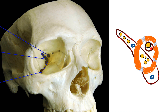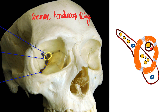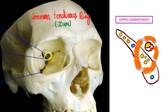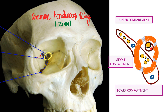There are four important recti muscles in the eye: the superior rectus, inferior rectus, medial rectus, and lateral rectus. These four recti take origin from a ring attached onto the superior orbital fissure called the common tendinous ring — also called the annulus of zinn — because it serves as a common tendinous origin. This ring divides the superior orbital fissure into a superior compartment (above the ring), a middle compartment (within the ring), and an inferior compartment (below the annulus of zinn).